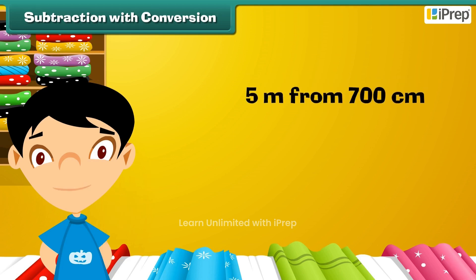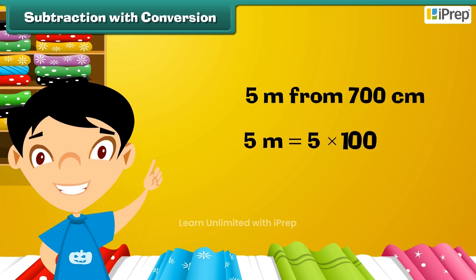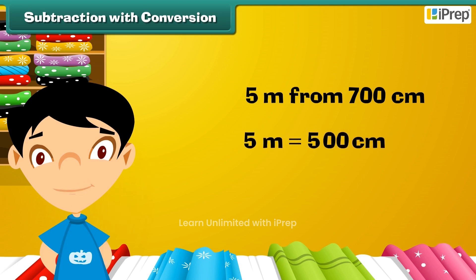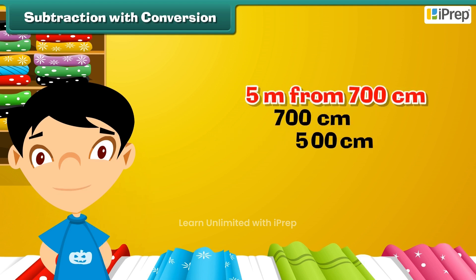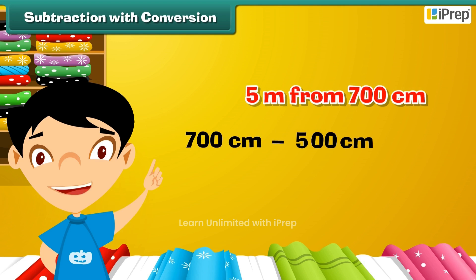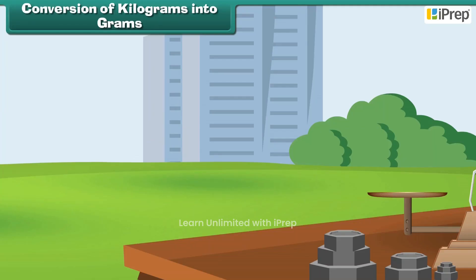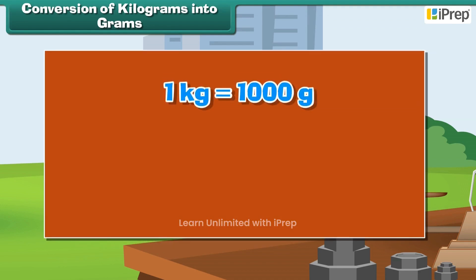Subtraction with conversion: let us subtract 5 meters from 700 centimeters. 5 meters is equal to 5 into 100 centimeters, which equals 500 centimeters. Therefore, 700 centimeters minus 5 meters equals 700 centimeters minus 500 centimeters.